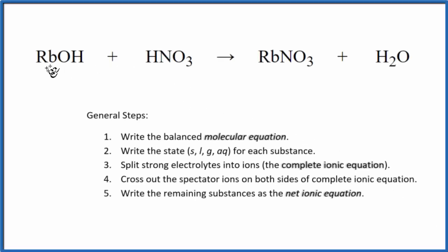In this video, we'll look at the reaction between RbOH plus HNO3. This is rubidium hydroxide and nitric acid. So when we look at this, this is going to be a neutralization reaction. That's because we have water and a salt on this side.